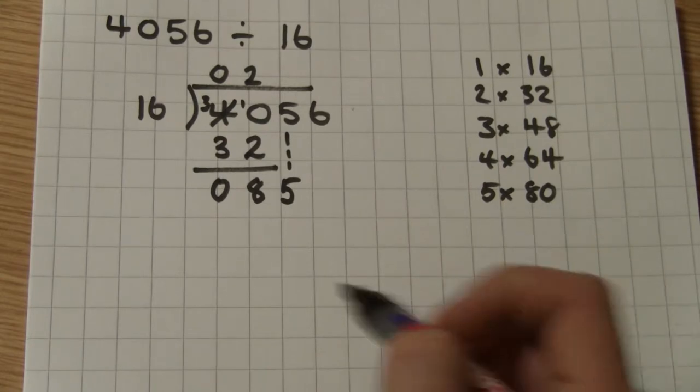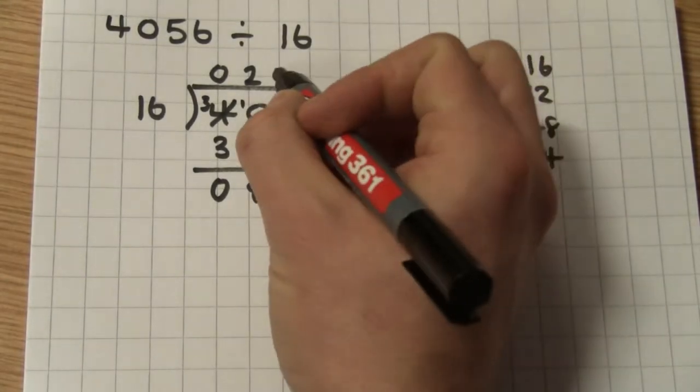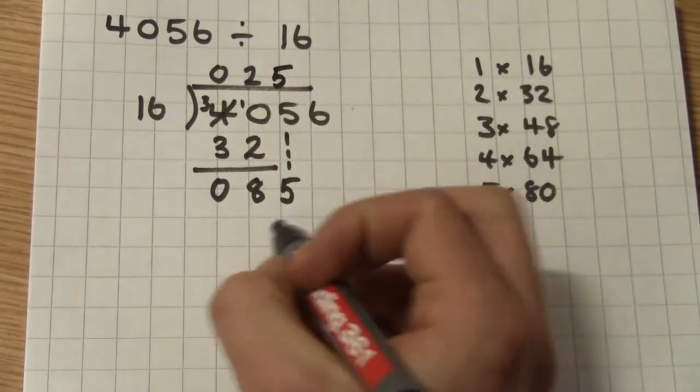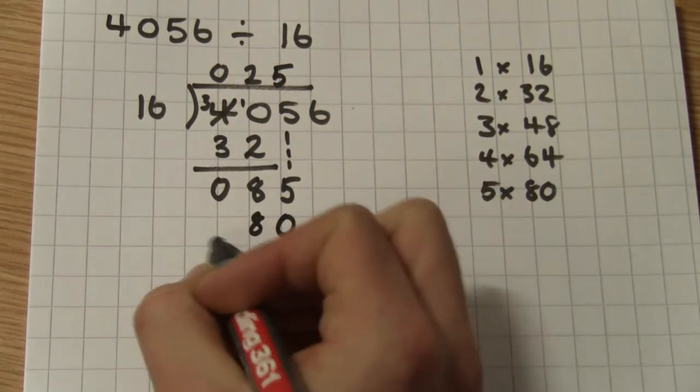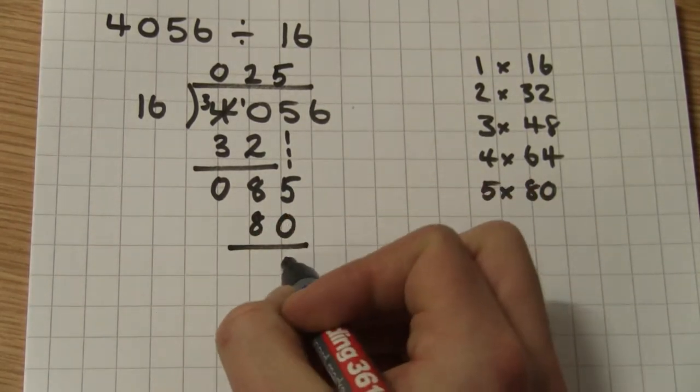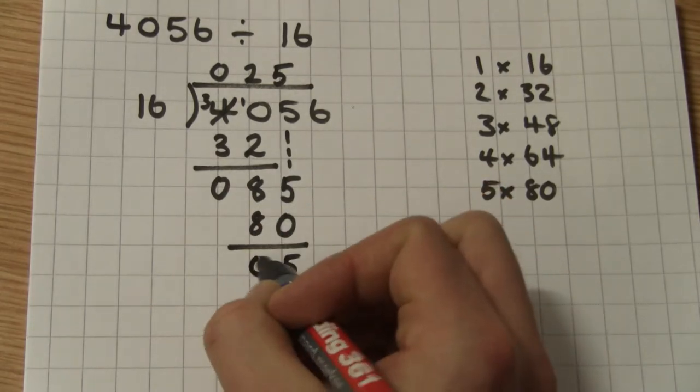By looking at the times table, we know it's five times. So I'll write my 5 up here and write 80 below. Time for another subtraction. Five take away zero is five. Eight take away eight is zero.